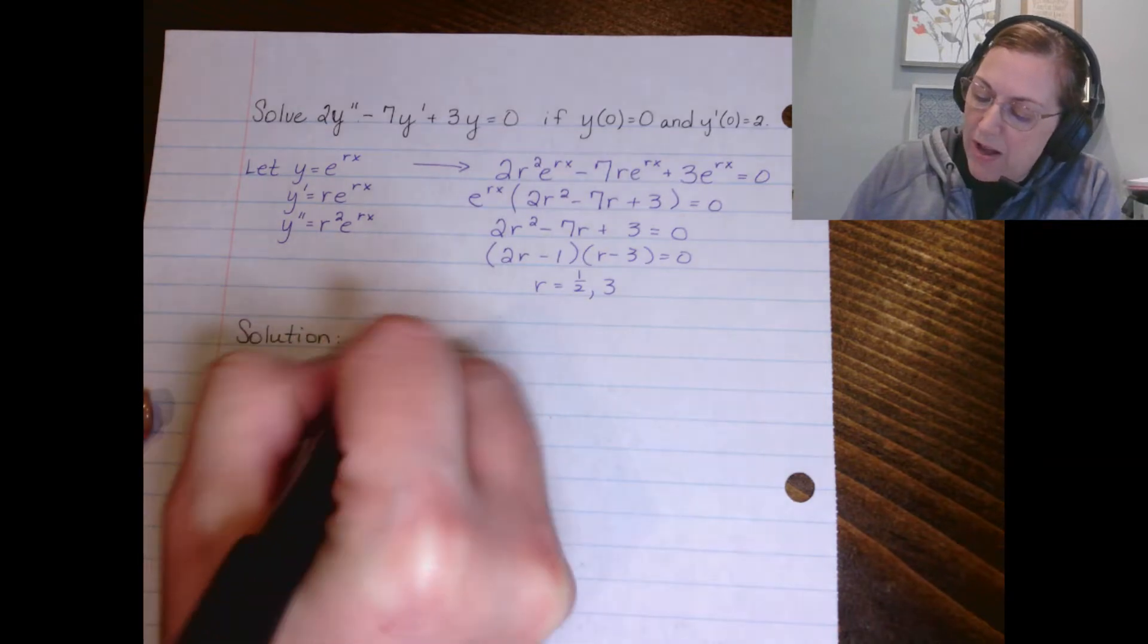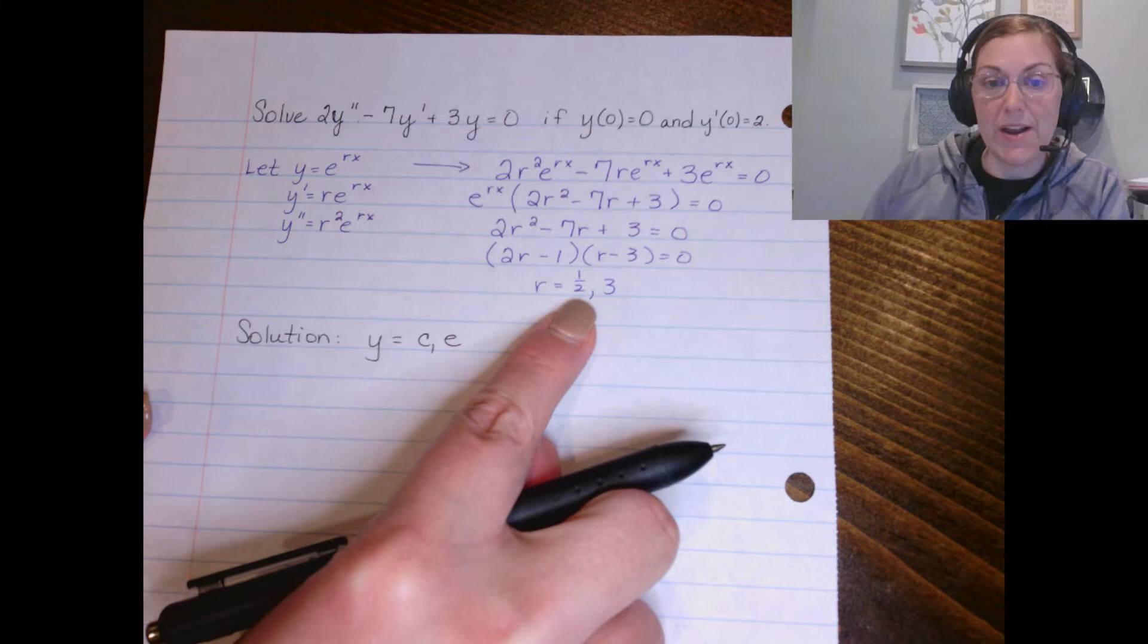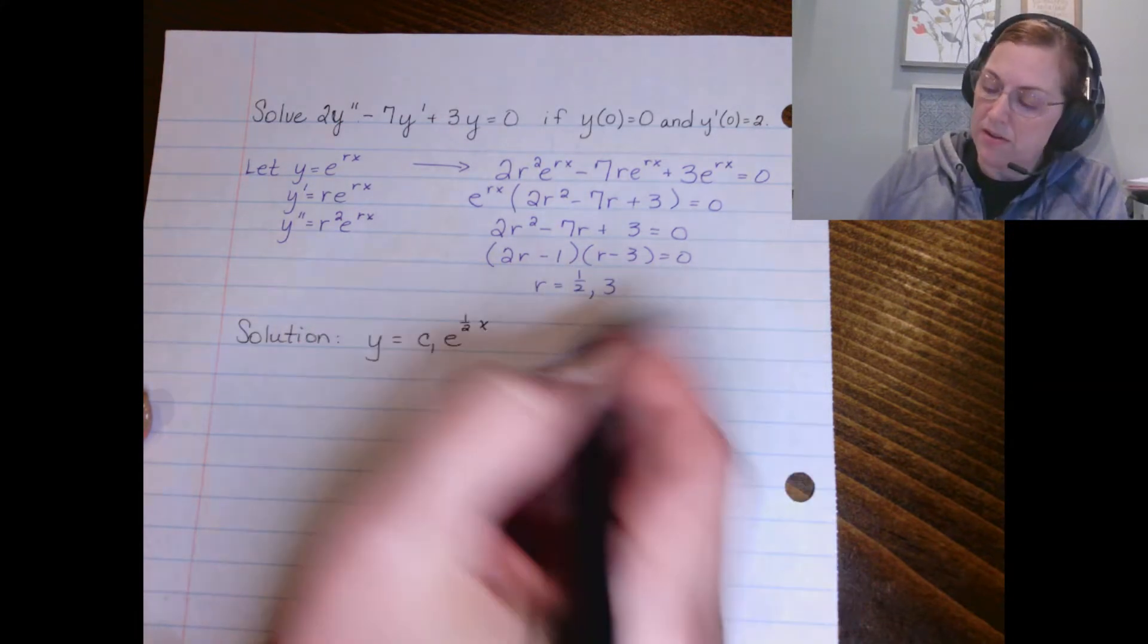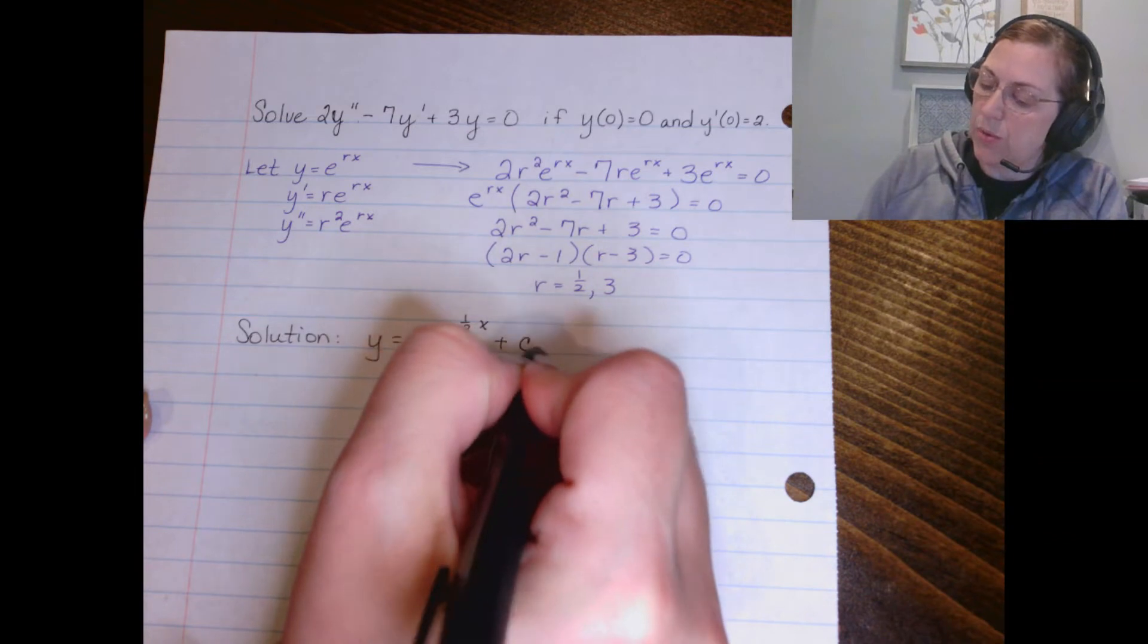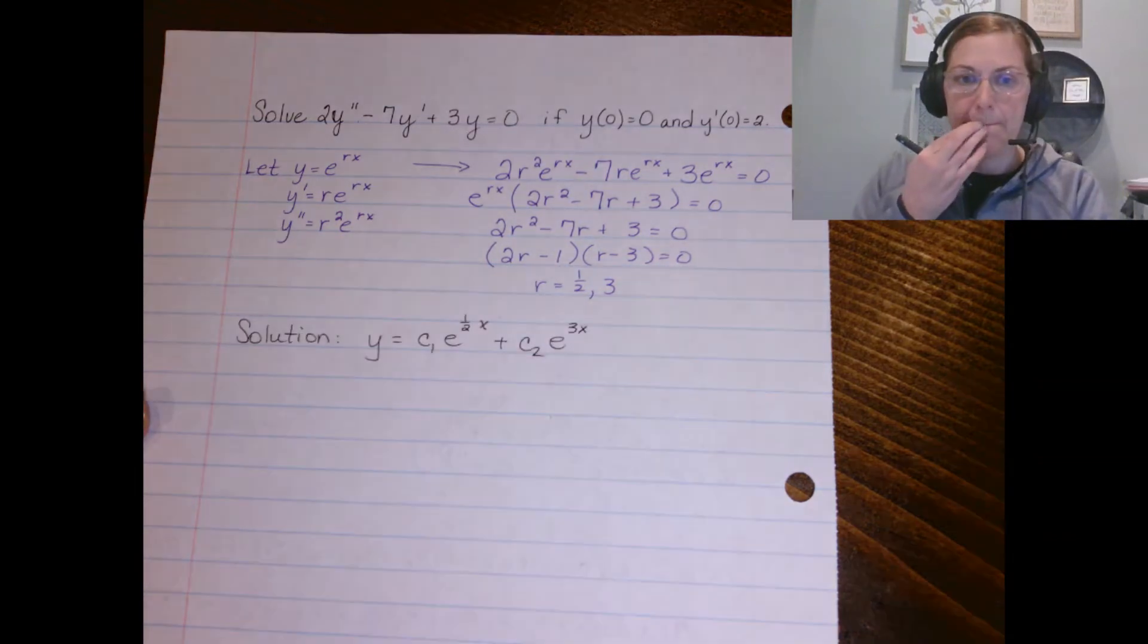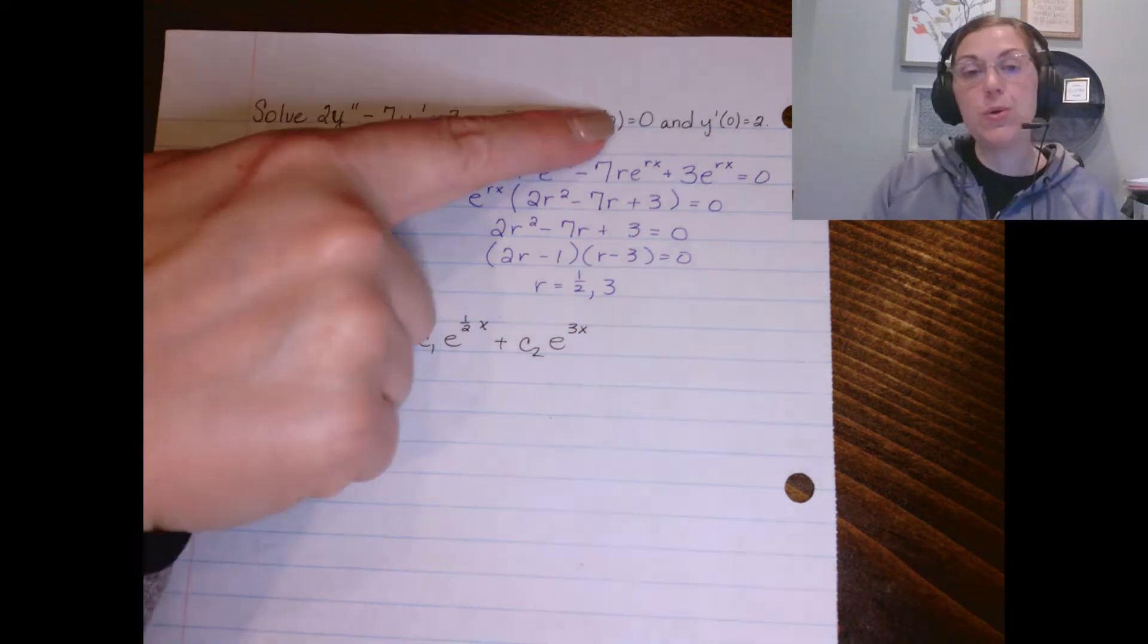And that is that y equals c₁ e^(1/2 x) plus c₂ times e^(3x). Now once you have your general solution, then you can use your initial values.